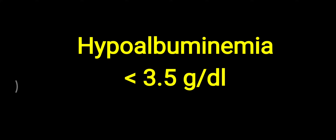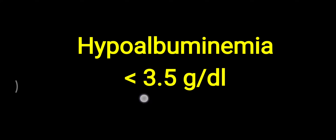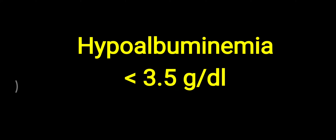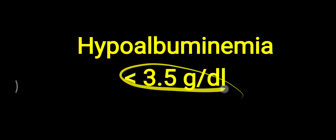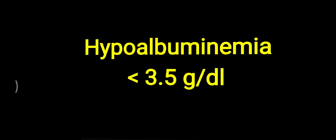Hello friends, today's topic is about hypoalbuminemia. Simply, hypo means low albumin level in the blood. The normal level of albumin in the plasma is 3.5 to 5 gram per deciliter. If albumin level is less than 3.5 gram per deciliter, then it is called hypoalbuminemia.